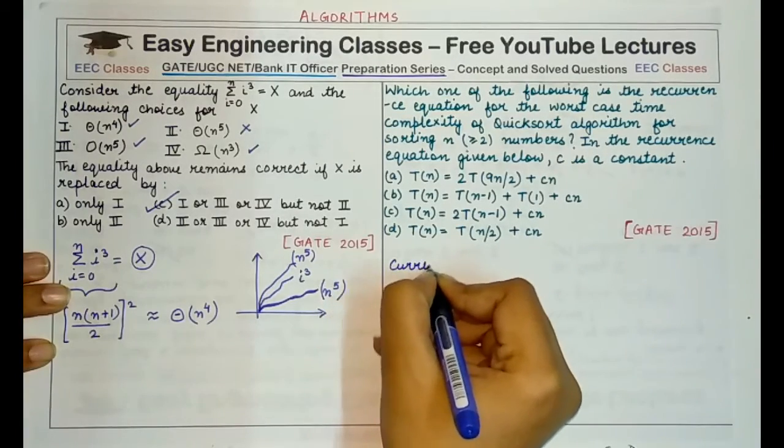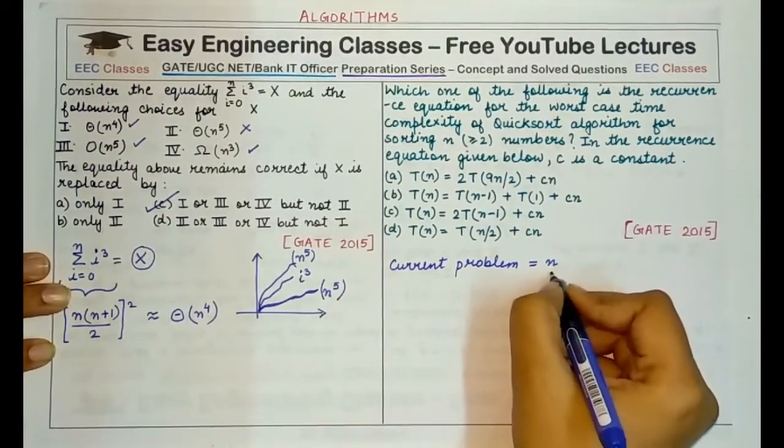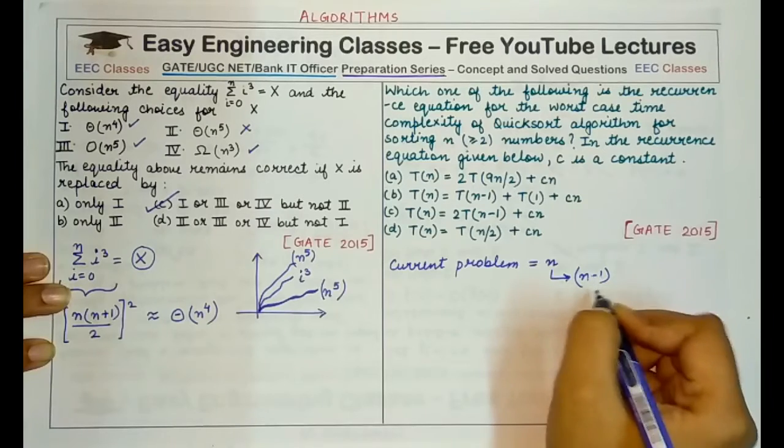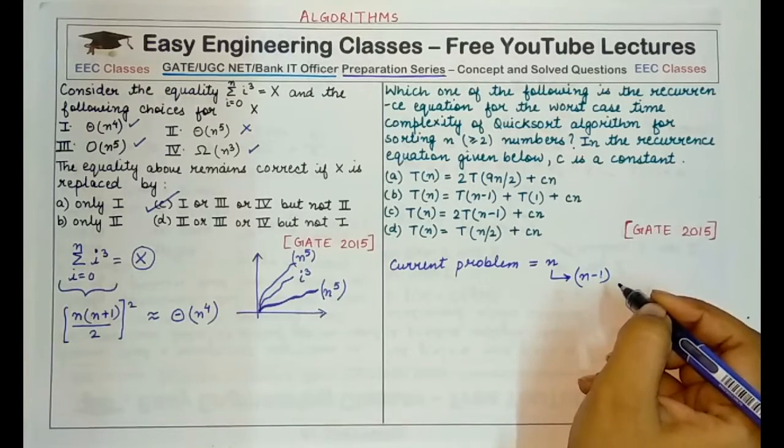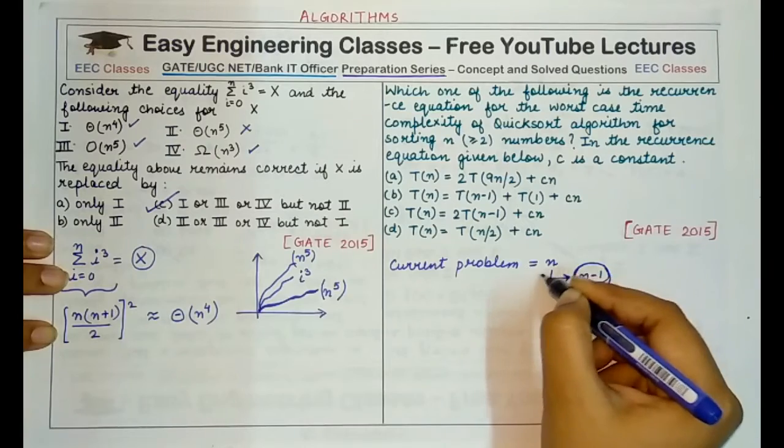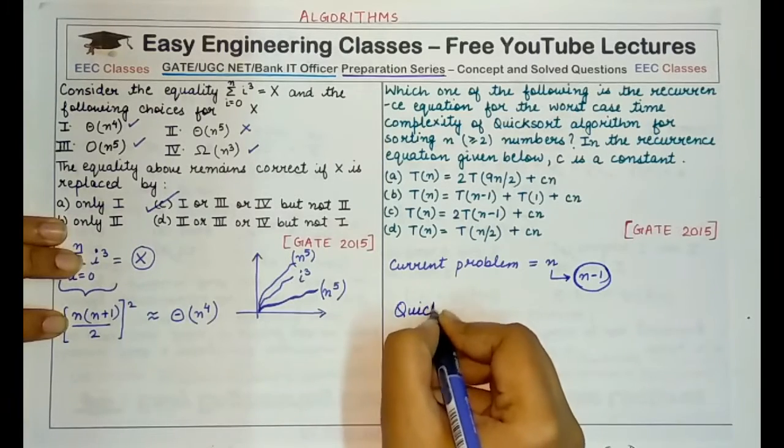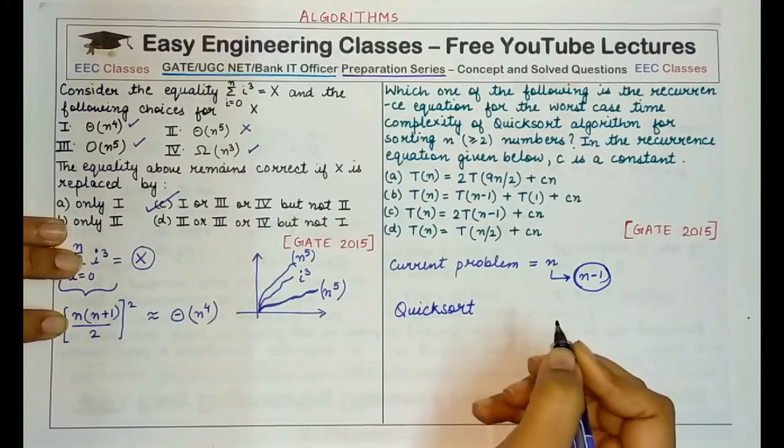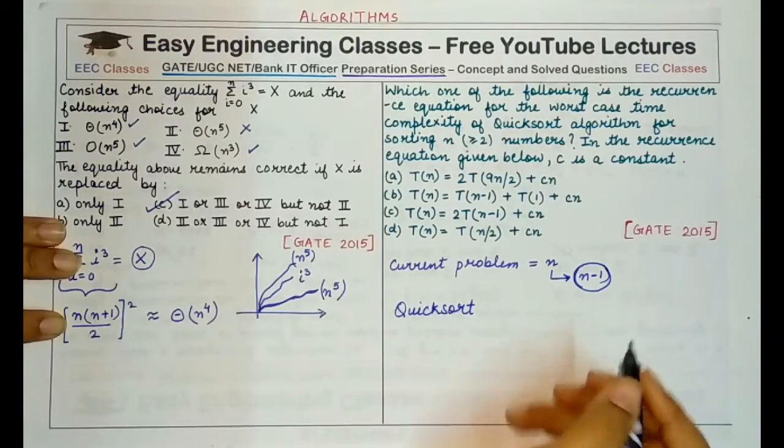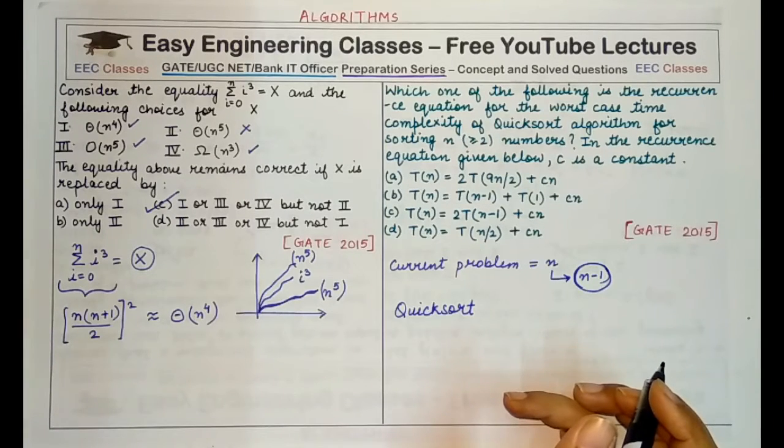So if the current problem has size n and we have to make a recursive call of size n minus 1, such is the problem given to us, then we say that in every case if we have to make calls which are of size one less than the previous problem size then the worst case occurs. For quicksort worst case occurs when the initial array is sorted in either ascending or descending order because every time if you choose the corner element you'll always be getting either the highest element or the lowest element.